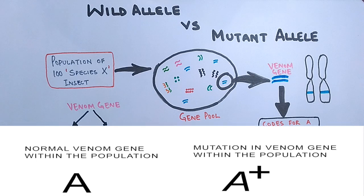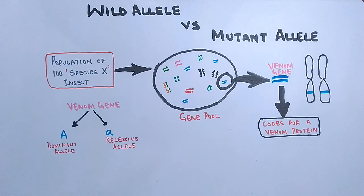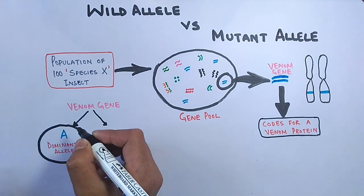But if a mutation occurs in the venom gene, the symbols for the alleles also change — we use superscripts at that time. The 'A' allele, that is the venom allele, when it expresses itself, encodes for a normal venom protein. In order to understand the wild and mutant allele, let's say within the population there is a mutation within the venom gene.